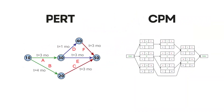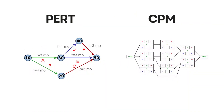Unlike other project management methods that might seem similar, like PERT — Program Evaluation and Review Technique — the critical path method uses a single time estimate for each activity, making it more straightforward to apply in real-world projects.